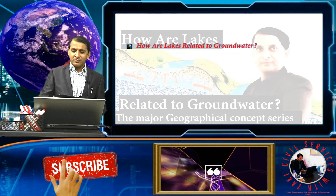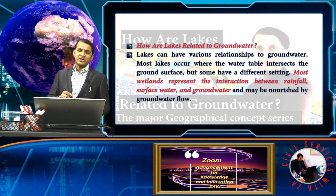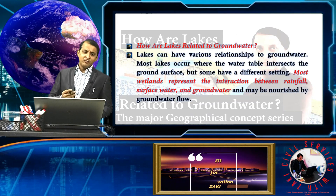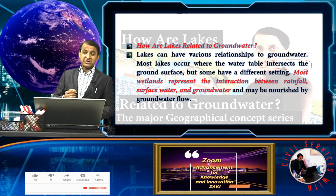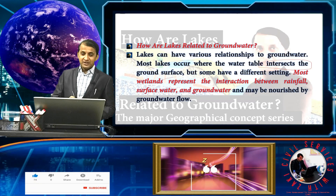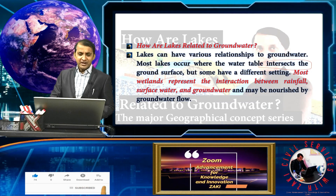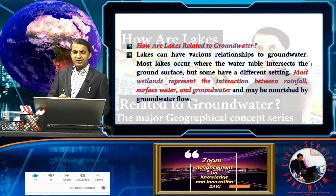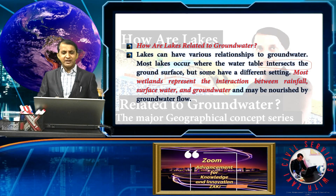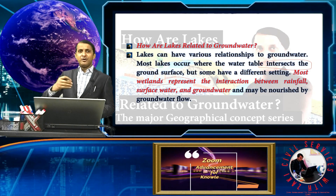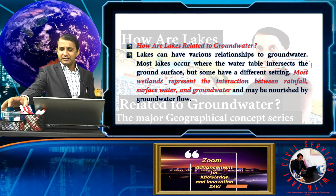Lakes can have various relationships with groundwater. Most lakes occur where the water table intersects the ground surface. Most wetlands represent the interaction between rainfall, surface water, and groundwater — all components of the hydrosphere interact with each other.